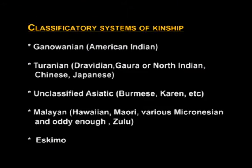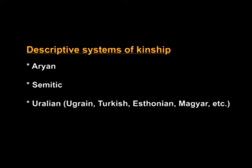In Morgan's classification scheme, classificatory systems include: Ganowánian (American Indian), Turanian-Dravidian, and Gaura or north Indian, Chinese, Japanese, and unclassified Asiatic (including Burmese, Karen, etc.), and Malayan (including Hawaiian, Maori, various Micronesian, and Zulu). Under the descriptive system, he includes Aryan, Semitic, and Uralian (including Ukrainian, Turkic, Estonian, Magyar, etc.).